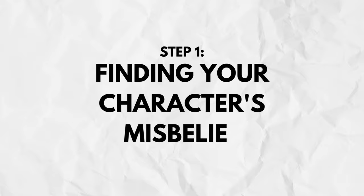Step one is finding your character's misbelief. I like making this step one in my process because it's really at the heart of your story's theme — it's kind of like the reverse-engineered theme of your story. If you can flip your theme on its head and turn it into a lie, because it's really a truth you want to weave into your story, that's essentially your character's misbelief. That's always been the easiest way I find to create the misbelief for your character.